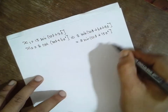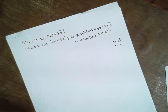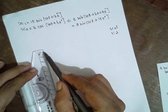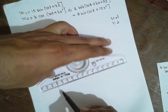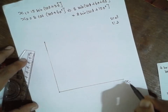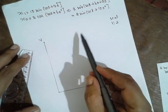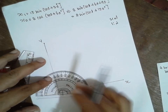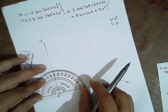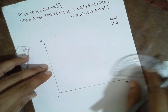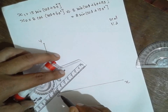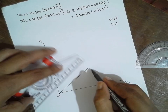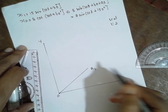Go for the scale 1 to 2. This is the X-axis, this is the Y-axis. X1 is 15 at 30°. From the OX line, go 30°. With scale 1:2, 15 becomes 7.5. I will consider this as A1 at 30°.